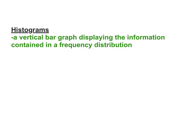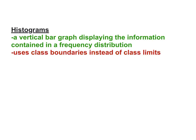A histogram is a vertical bar graph that displays the information contained in a frequency distribution. The way we create a histogram has specific criteria. For the histogram, we use class boundaries, not class limits. That column in your frequency distribution that you didn't use for anything in 2-1 — we're now going to use it in 2-2.